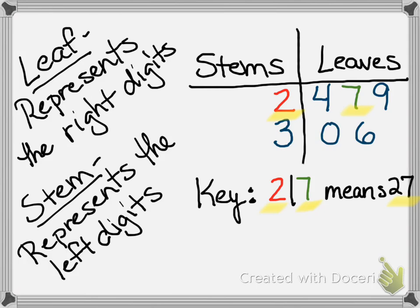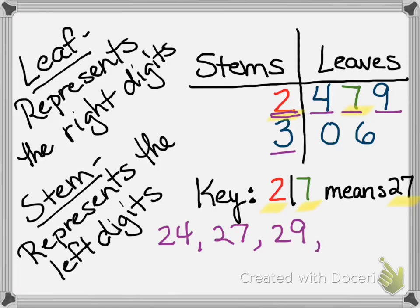If we were reading the whole stem and leaf plot, we could read 24 as our first number, 27 as our second, 29 as our third, then 30, and then 36. So it's a way of listing out the numbers using the tens digits once, while the ones digits are listed as we go.